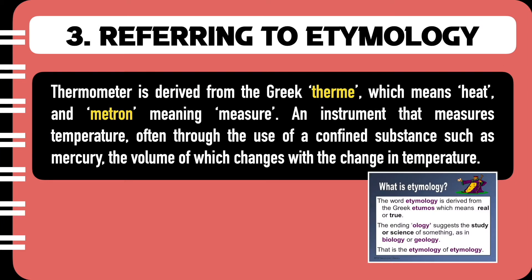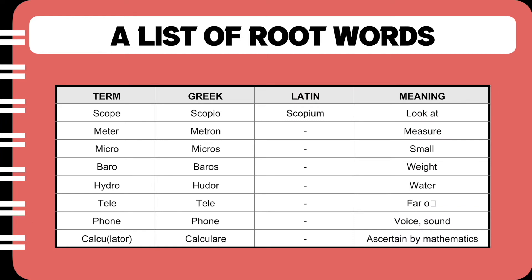The next way is by referring back to the root word or the etymology. Many English words are borrowed from other languages, especially scientific words. Thermometer is derived from the Greek term meaning heat and metron meaning measure: an instrument that measures temperature, often through the use of a confined substance such as mercury, the volume of which changes with a change in temperature. Because there are a lot of borrowed words in English, I have gone ahead and given a list of commonly used root words in the technical arena — you can have a look at it at your leisure.